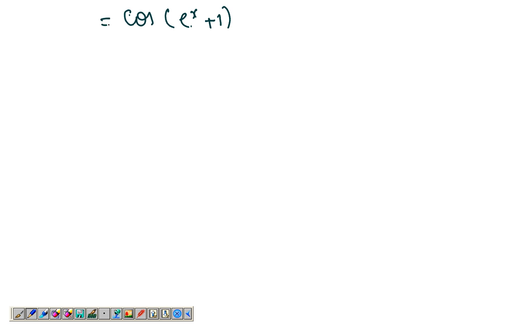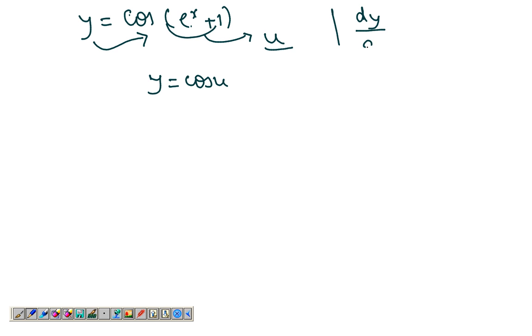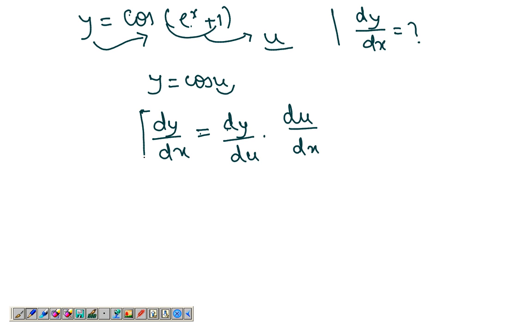Let's take another example: y = cos(eˣ + 1). This is a function of another function. Let's call the inner part u, so y = cos(u), and we're asked to find dy/dx. Using the chain rule, dy/dx can be written as (dy/du) times (du/dx). This is exactly what the chain rule is.